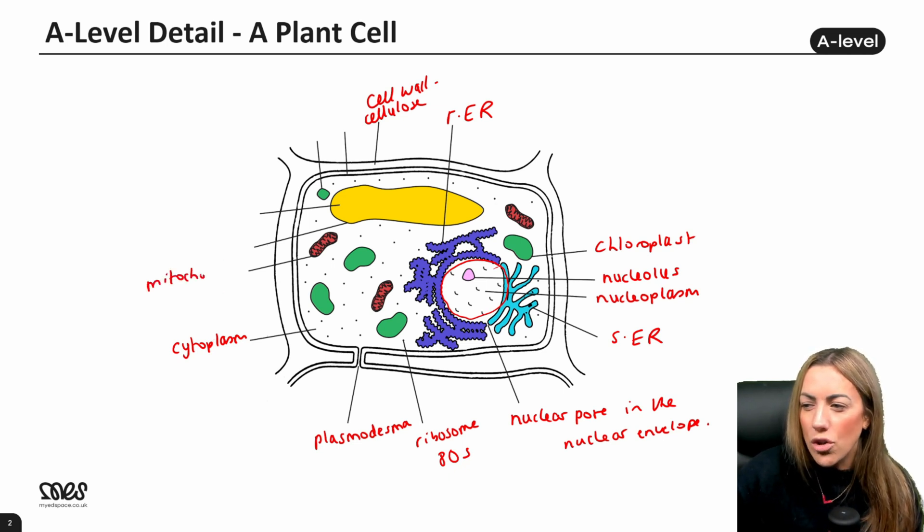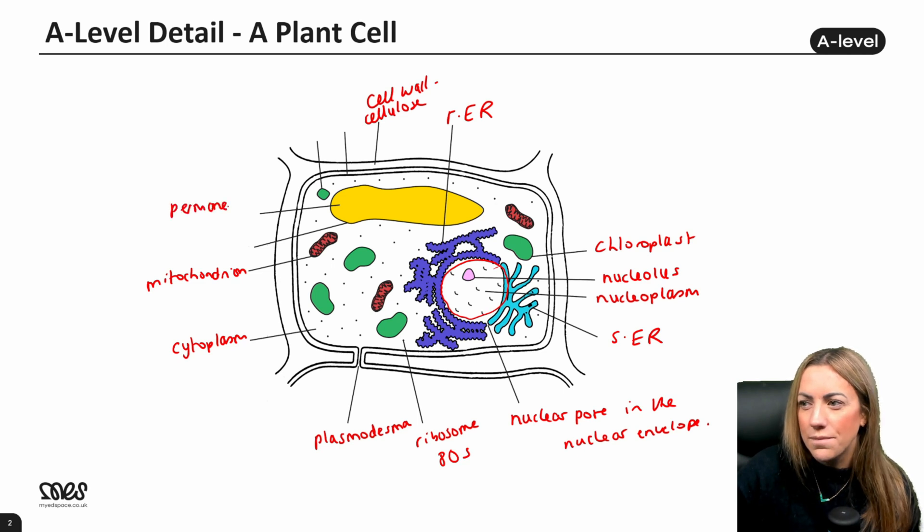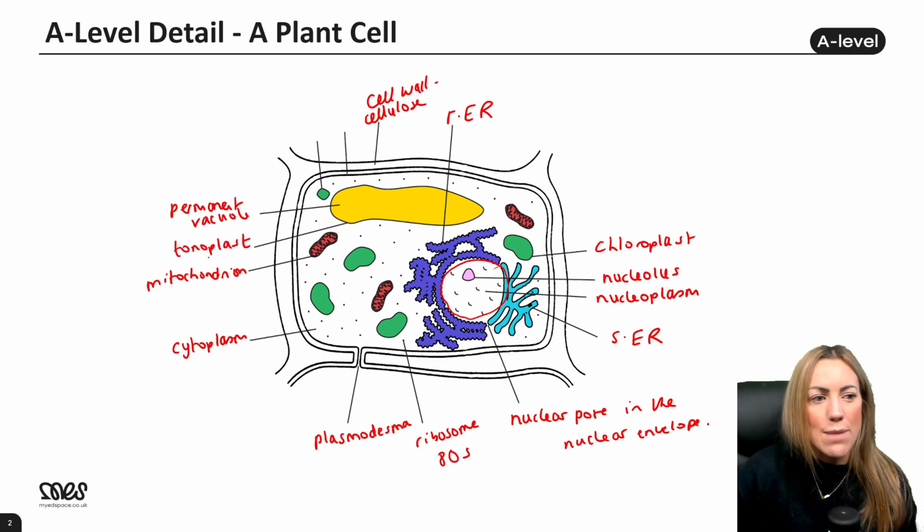Here we've got mitochondrion, which is the site of aerobic respiration and makes ATP. We did go through the structure and function of all of these organelles in the previous video, by the way. Here we've got the permanent vacuole, which we know from GCSE plant cells have large permanent vacuoles. This is surrounded by a membrane and the membrane is called the tonoplast. So I'll label that on there as well.